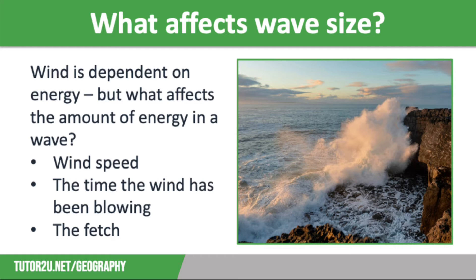And lastly, the fetch. This is the distance that the wind has blown over — essentially the distance between two coastlines. If the fetch is longer, more energy can build up. This is why the Cornish coast is one of the best places to surf in the UK, as the fetch across the Atlantic Ocean to Cornwall is much bigger than the fetch across the North Sea, so waves on the southwest coast are much bigger than those on the east coast.